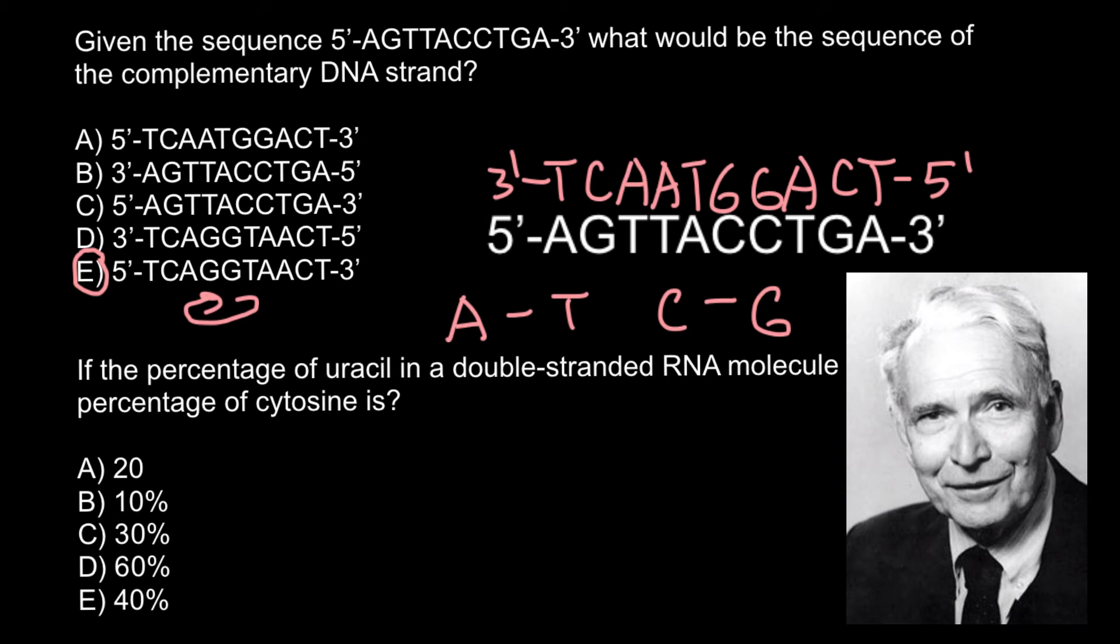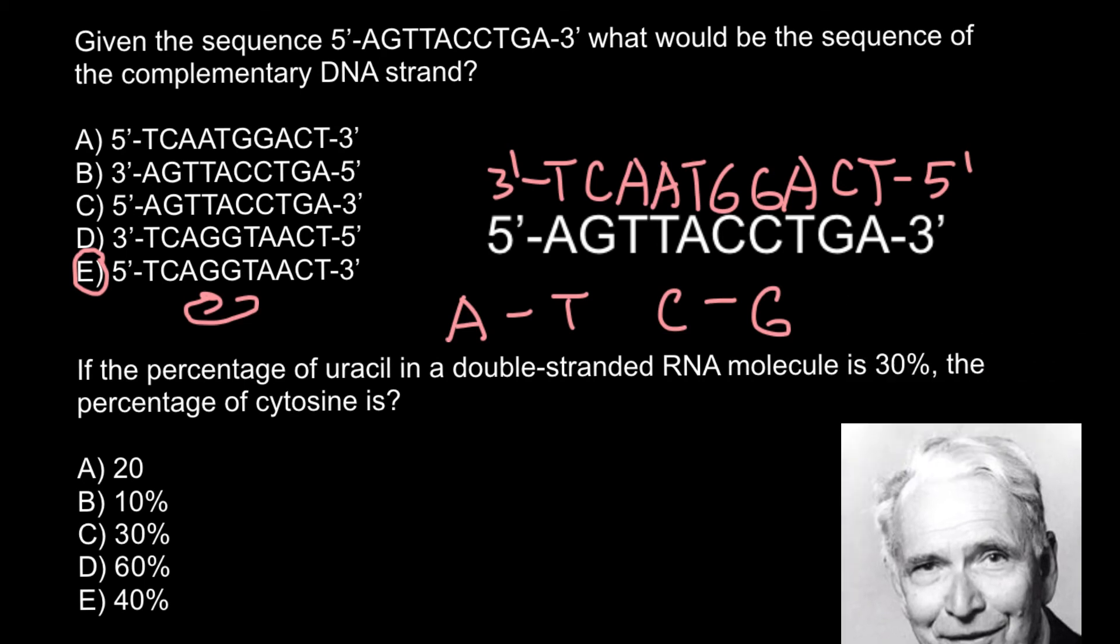Basically, he postulated two rules, and the second rule is that the proportion of adenine and thymine to cytosine and guanine in different species, in different organisms, would also be different. This helped scientists of those days understand that DNA can be a source of inheritance, because many scientists at that time were thinking that four bases were not enough to code for all the proteins, and were thinking that proteins themselves were hereditary material.